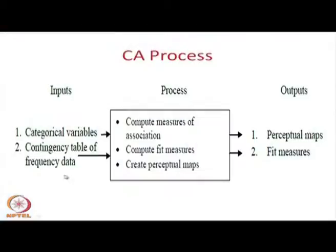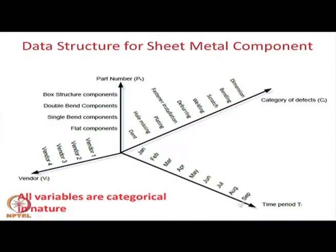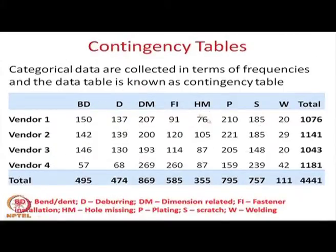We are talking about defects in sheet metal components of a medical diagnostic equipment, supplied by four vendors. There are different part numbers, different time periods, and different categories of defects. When you compare any two of these categorical variables, you get contingency tables. With four categorical variables, 4C2 gives six contingency tables. In this lecture we analyze each contingency table using correspondence analysis.